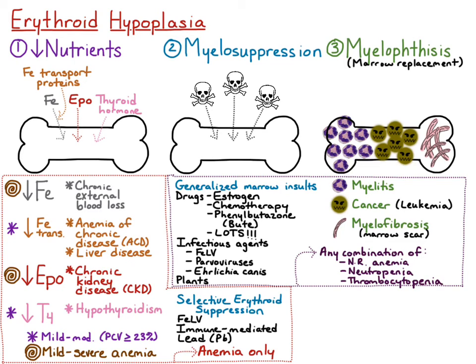If we just see decreased production of two cell lines, we call this bicytopenia. But if all three cell lines are decreased, then we call this pancytopenia.